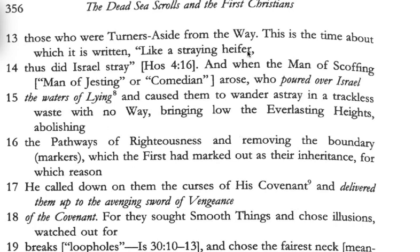We know from the works of Epiphanius among others that the Ebionites and the Nazarenes rejected Paul — they rejected Paul claiming to be a disciple. This 'man of jesting,' the comedian, also known as the 'spouter of lies,' appears to all be one person. It appears this spouter of lies also was someone who claimed to be a disciple but was not. He is associated with the traitors, indicating someone who was a member of the party, turned away, and became something else.